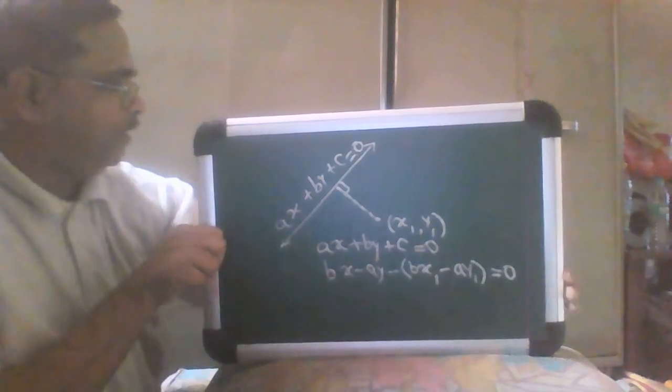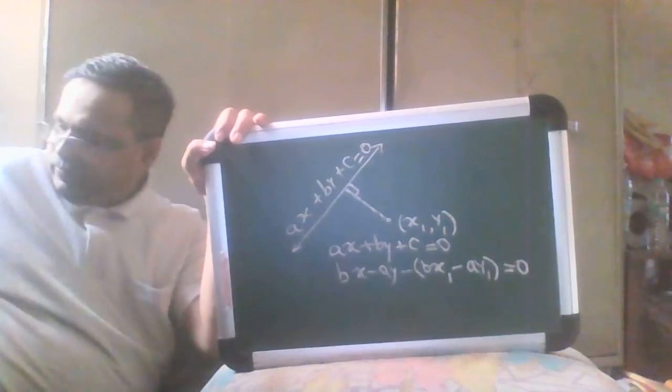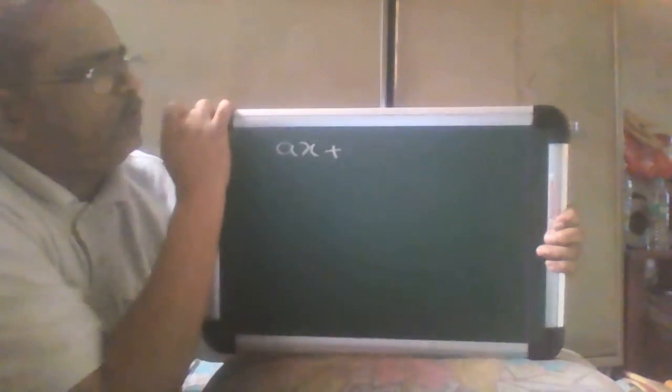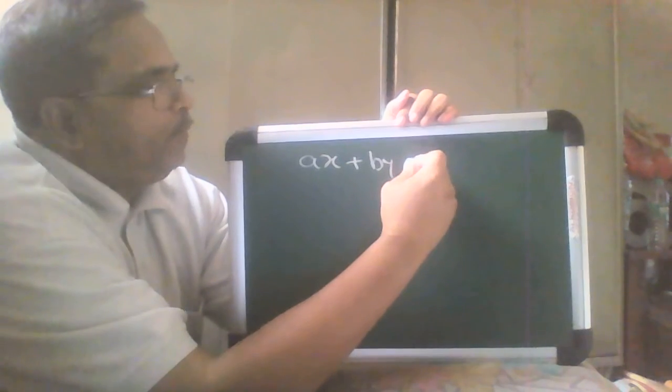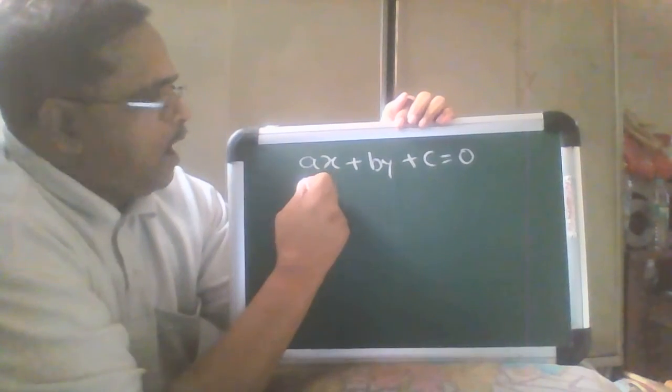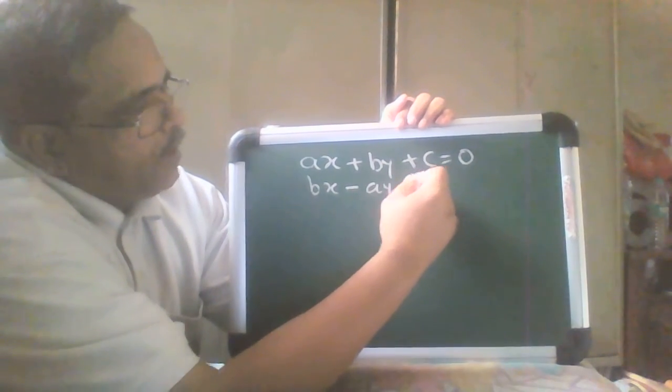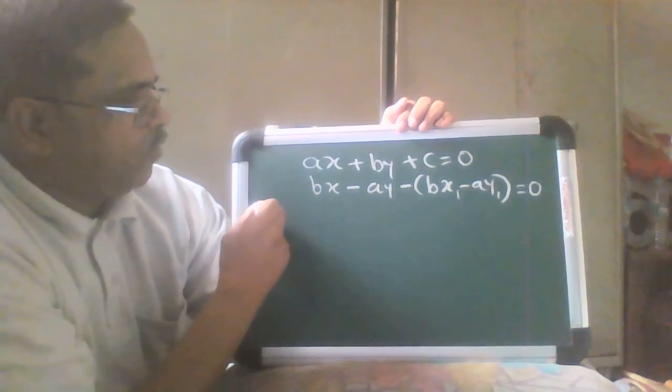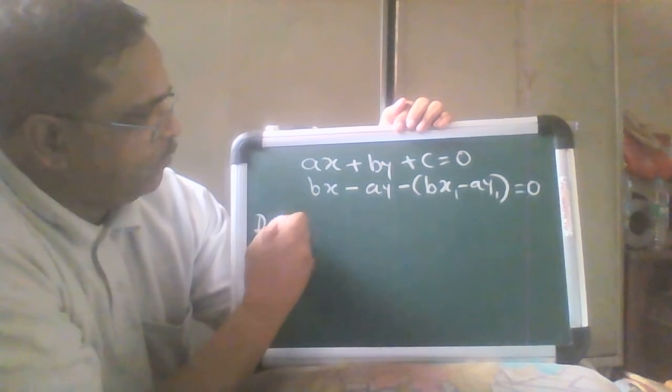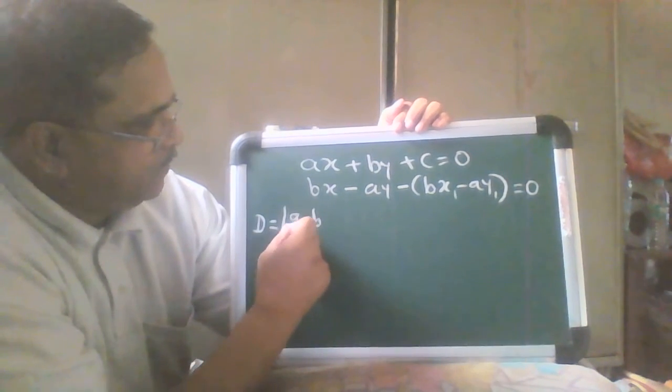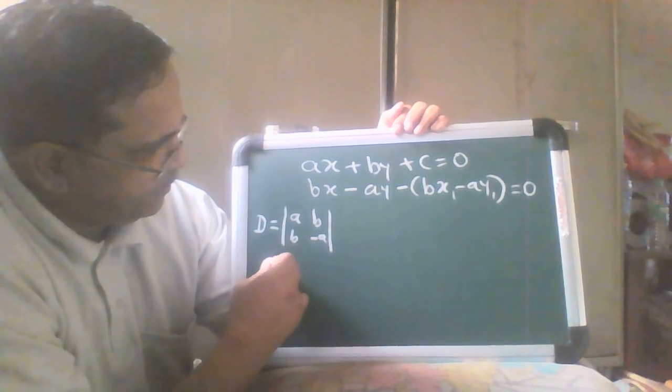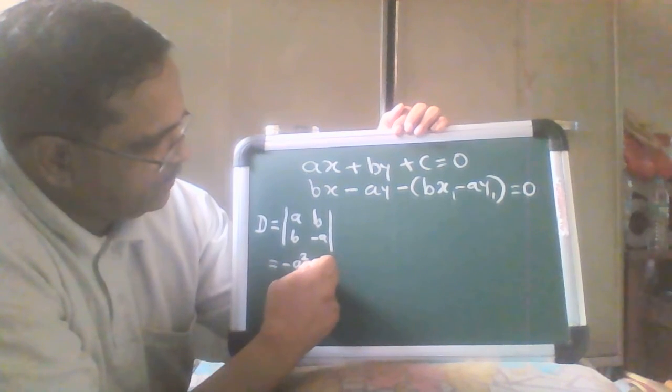Now to solve these two equations, we have a very simple process of determinants and that also we have studied earlier. We will find out the determinants for that case. I use another board. We have ax plus by plus c is equal to 0, and bx minus ay minus bx1 minus ay1 is equal to 0. We get determinant D is equal to a, b, b, minus a. So it will be minus a square minus b square.